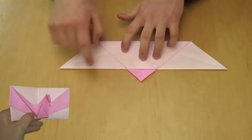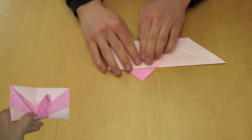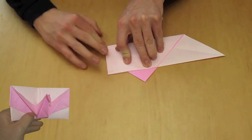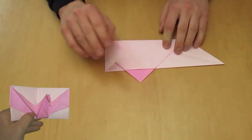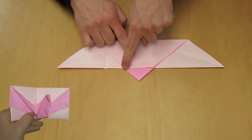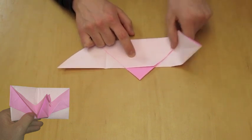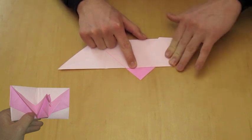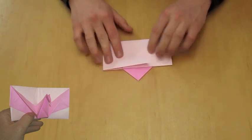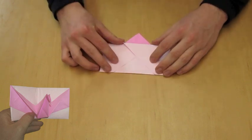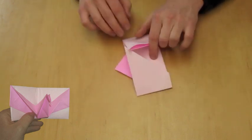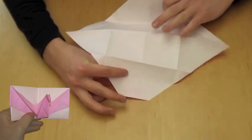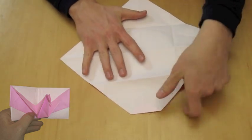Now valley fold the corner to the point indicated. Now do the same with the other side. Your paper should look like this. Now unfold everything. These folds are going to come in handy later when we're forming the card.